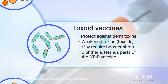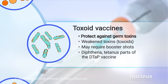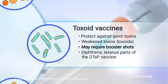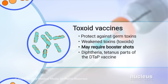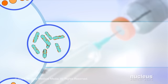Toxoid vaccines protect against harmful substances made by germs called toxins. They use weakened versions of the toxins called toxoids. You may need booster shots to maintain protection against diseases. Examples are the diphtheria and tetanus parts of the DTaP vaccine.